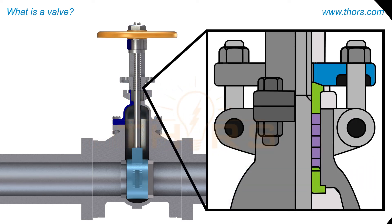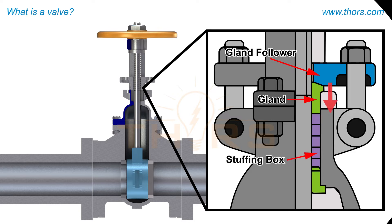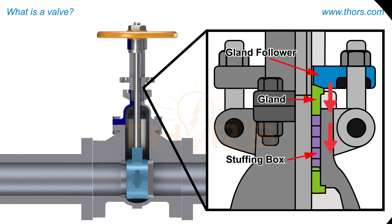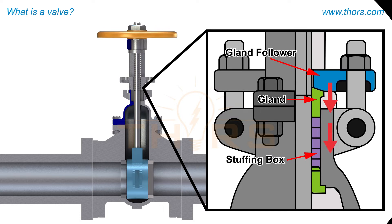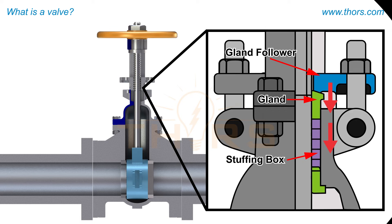A gland packing arrangement consists of a metallic ring called a gland follower, a bushing known as a gland, and a stuffing box. The gland follower and the gland together compress a flexible sealing into the stuffing box to prevent leakage.